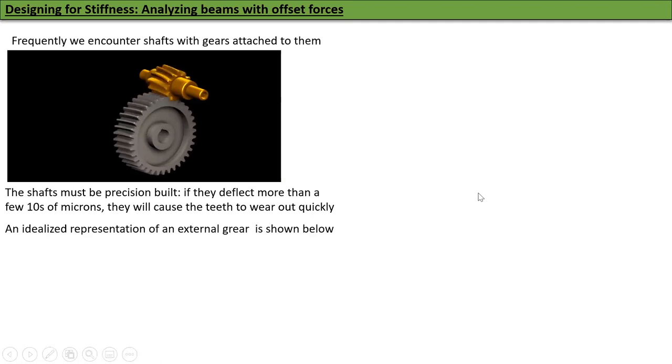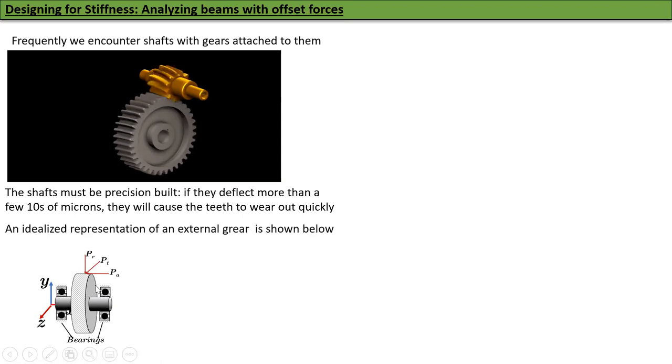An idealized representation of an external gear is shown below. Notice that there is a gear with teeth, a shaft, and two bearings. Notice how close the bearings are to the gear. It will not be a long shaft because deflection is proportional to L cubed. If you make a long shaft, it will deflect too much and wear the gear out. So it's got to be a short shaft.